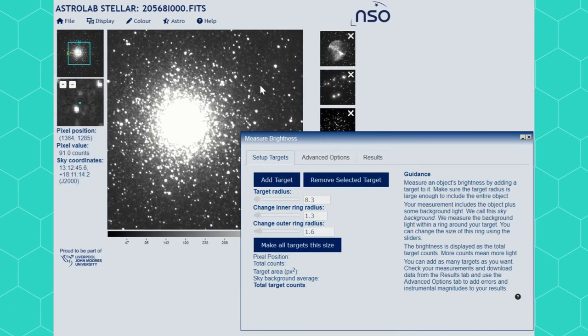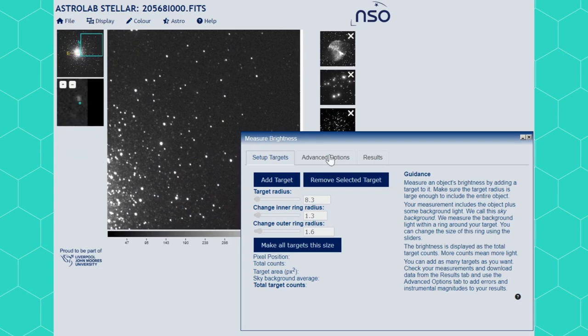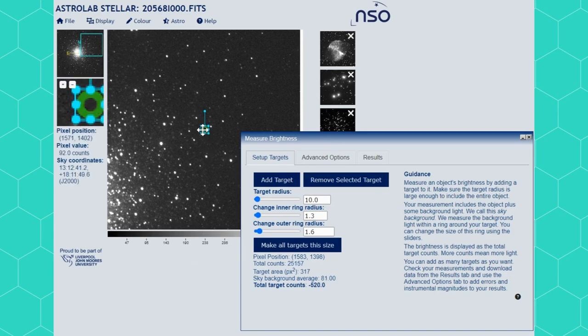Now I can set up a target on the image. I'm going to zoom into the outer regions of the cluster where the stars are more spaced apart and there'll be blank space around them to measure my sky ring. Add a target and adjust as before. You can use the zoom in view to the left to check that your central circle is as close to the star centre as possible.